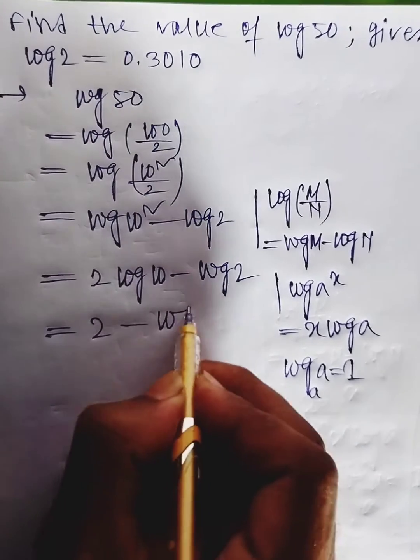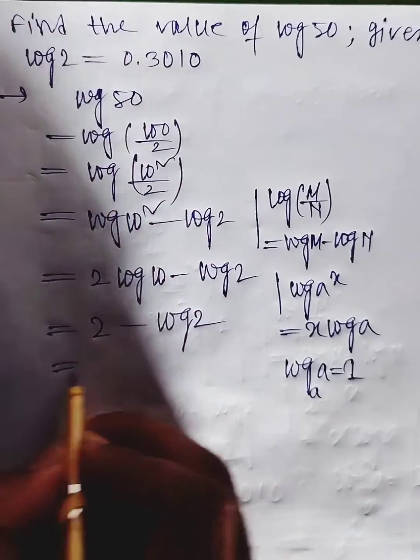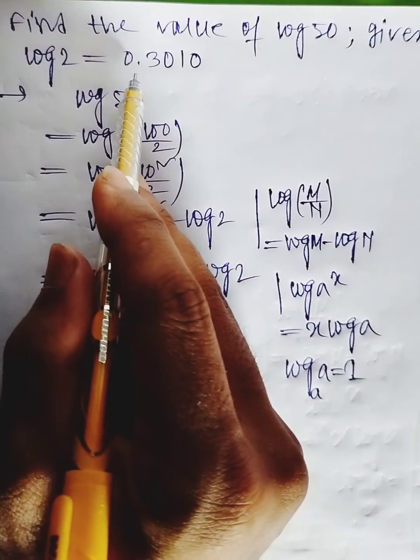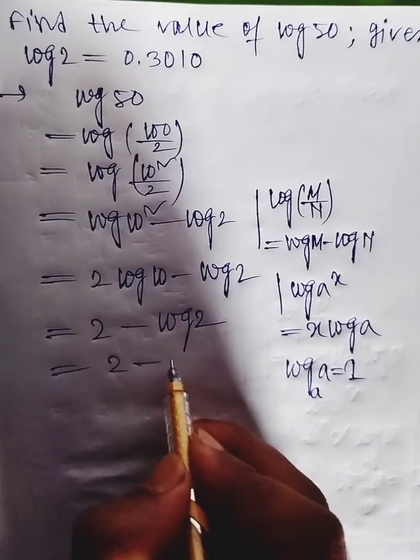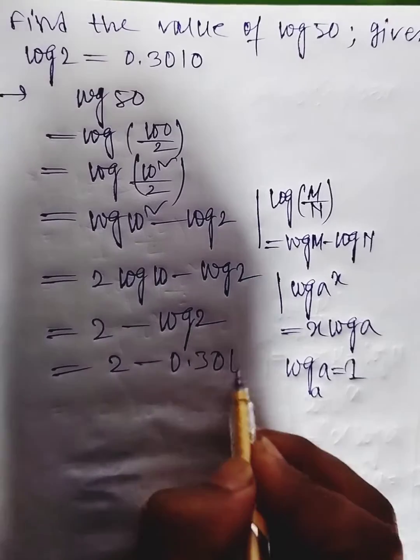This becomes 2, so 2 minus log 2. Here the value of log 2 is given as 0.3010, so we have 2 minus 0.3010.